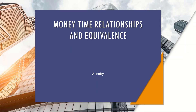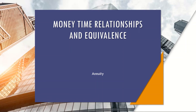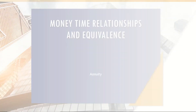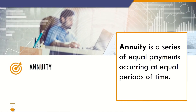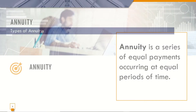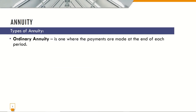The second part of money-time relationships and equivalence topic is all about the annuity. The definition of annuity is a series of equal payments occurring at equal periods of time. There are four types of annuity.